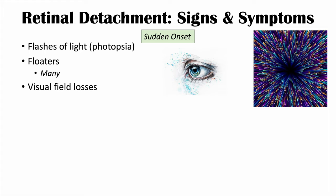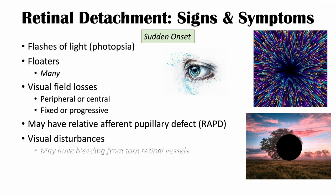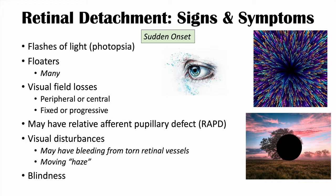Visual field losses can occur because the retina is required for vision — damage can affect peripheral or central vision, and these losses can be fixed or progressive. Patients may also have a relative afferent pupillary defect. Bleeding from torn retinal vessels can cause visual disturbances that appear as a moving haze, and ultimately this can lead to blindness.